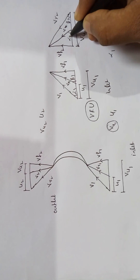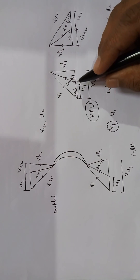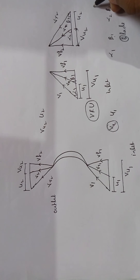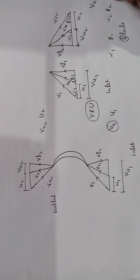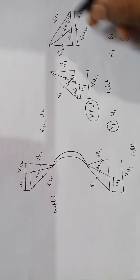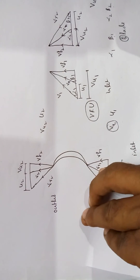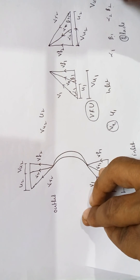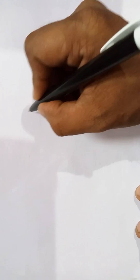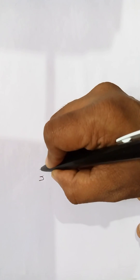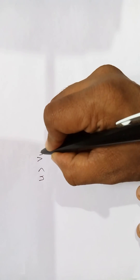Now I will write these inlet and outlet velocity triangles for the case of Vu1 greater than Vu2. Then I will write the velocity triangle for the case where the blade speed U is greater than Vu1.